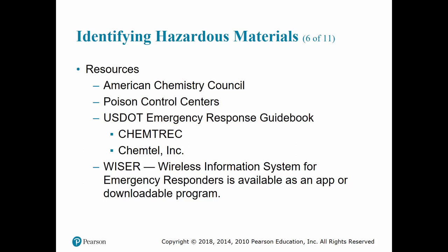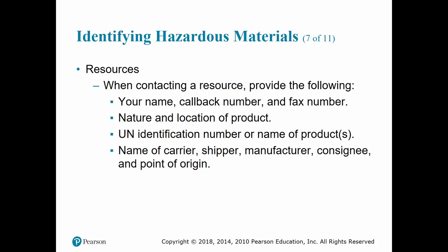You also have poison control centers — a simple phone number you can call to get information about a substance. ChemTrack is another phone number where you can give them the information on the tank and they can help you identify the material. You always want to provide your name, callback number, fax number, nature and location of the product, the UN number or name of the product, as well as the name of the carrier, shipper, manufacturer, consignee, and point of origin.